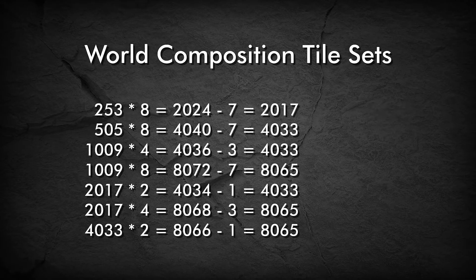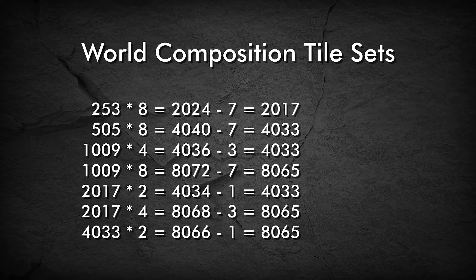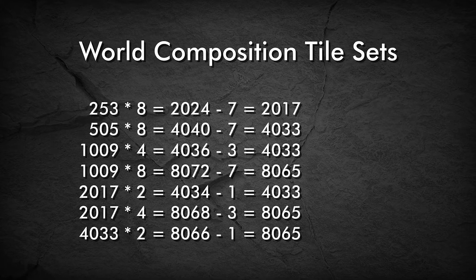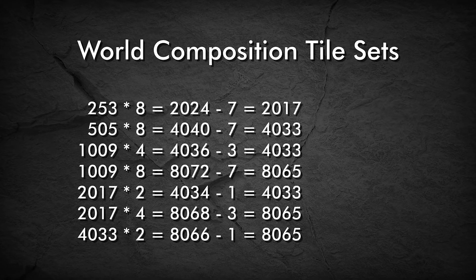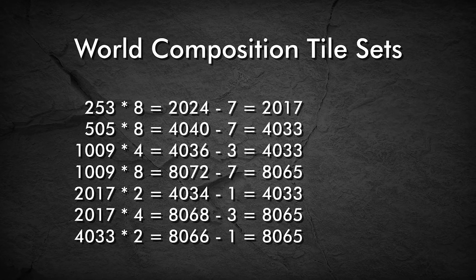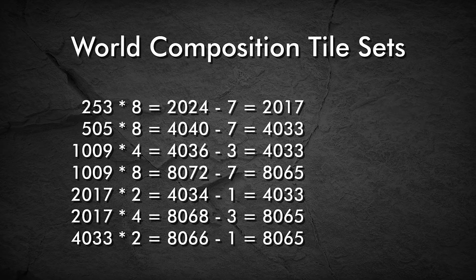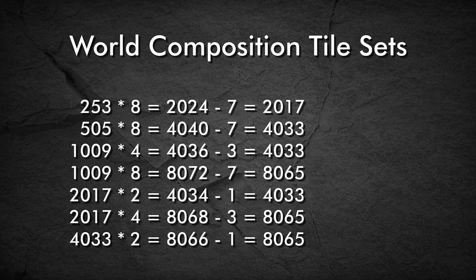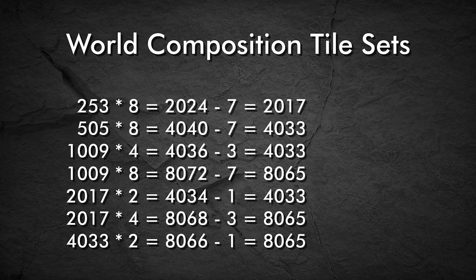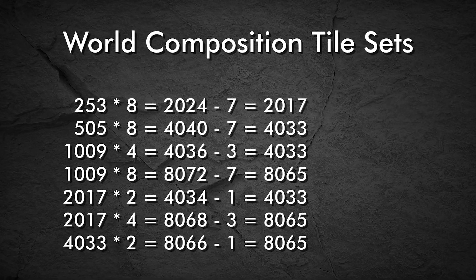First, we need to look at how the large single height map will be split into tiles and whether the large height map has to be cropped or resampled. The default world composition tile sizes that fit to large landscapes are as follows. These values are all using recommended landscape sizes for the tiles, which is highly recommended even with world composition. Note that the tiles have shared edges, which is why we subtract the number of tiles minus 1 from the total width.